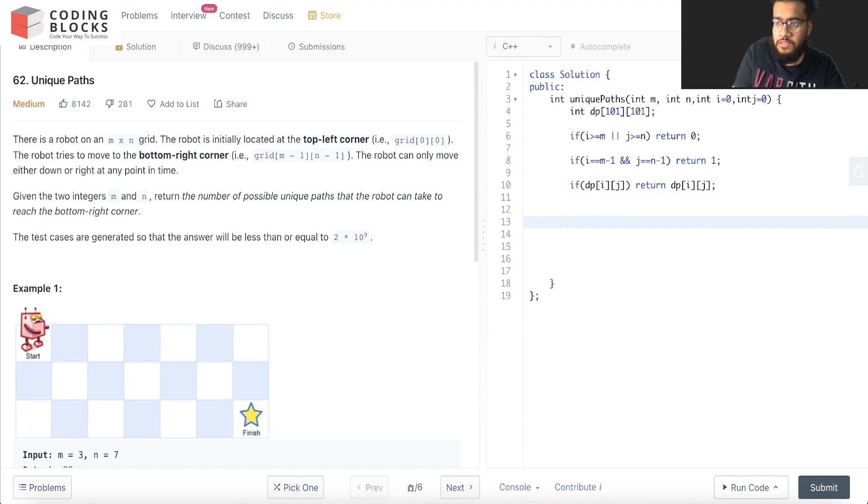Else what we'll do is we'll just return dp[i][j] equal to... Let me see. We'll first look for the... we have two options: either down or right side. So here it will be i and j plus 1.